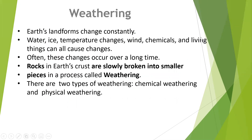As we talked about at the beginning of this week, earth's landforms change constantly. Water, ice, temperature changes, wind, chemicals, and living things can all cause changes. Often these changes occur over a long period of time. Rocks in earth's crust are slowly broken into smaller pieces in a process called weathering. There are two types of weathering: chemical weathering and physical weathering.